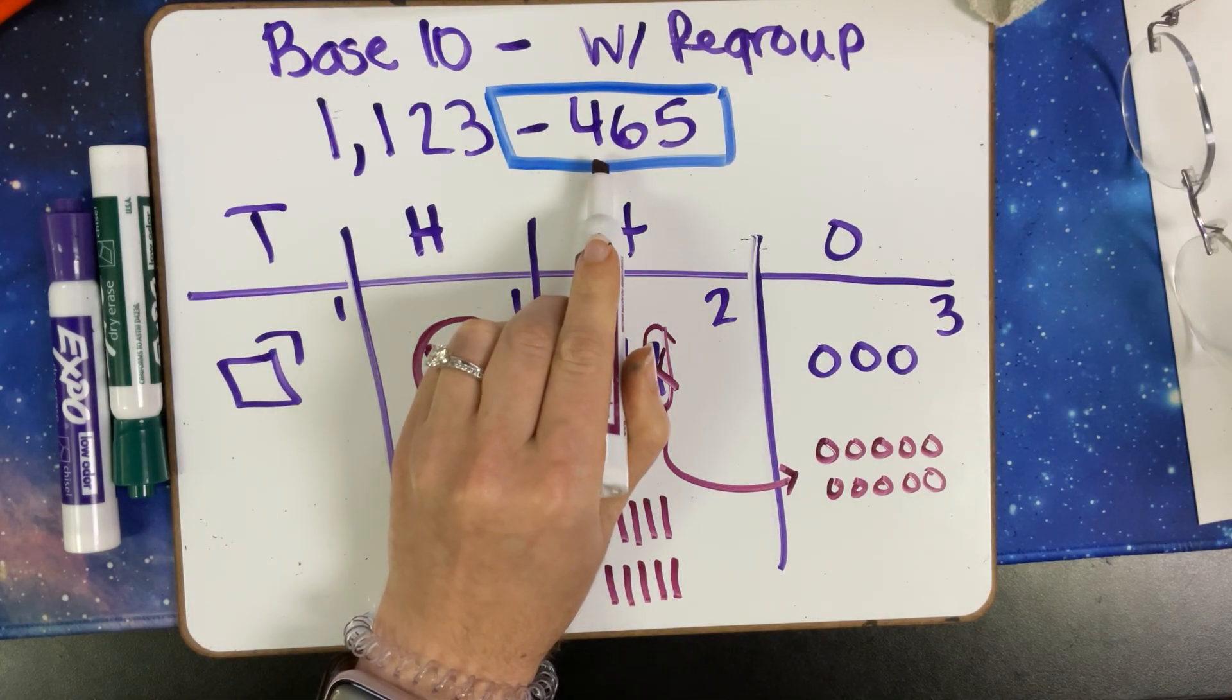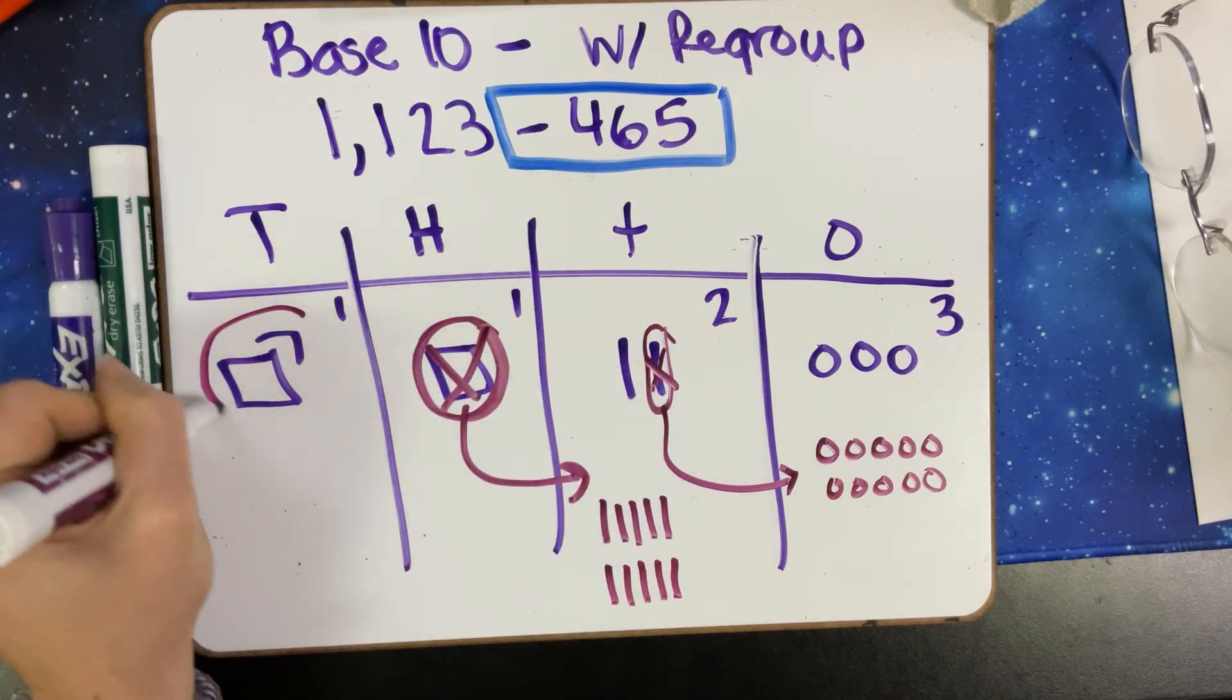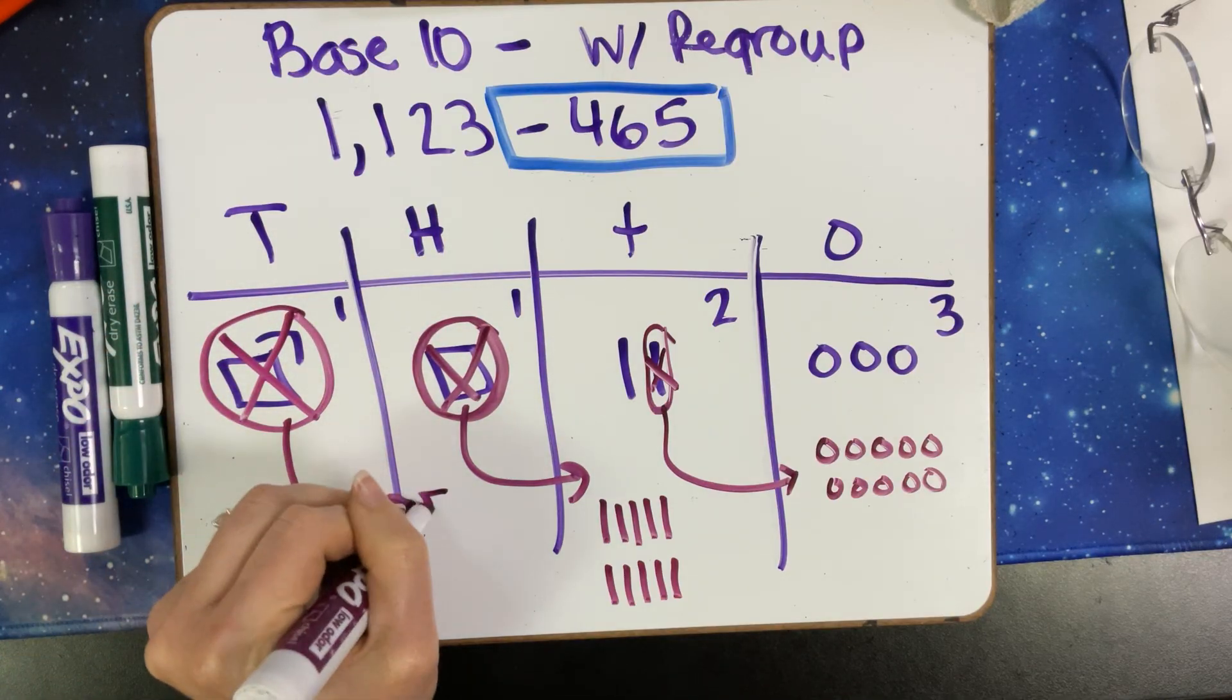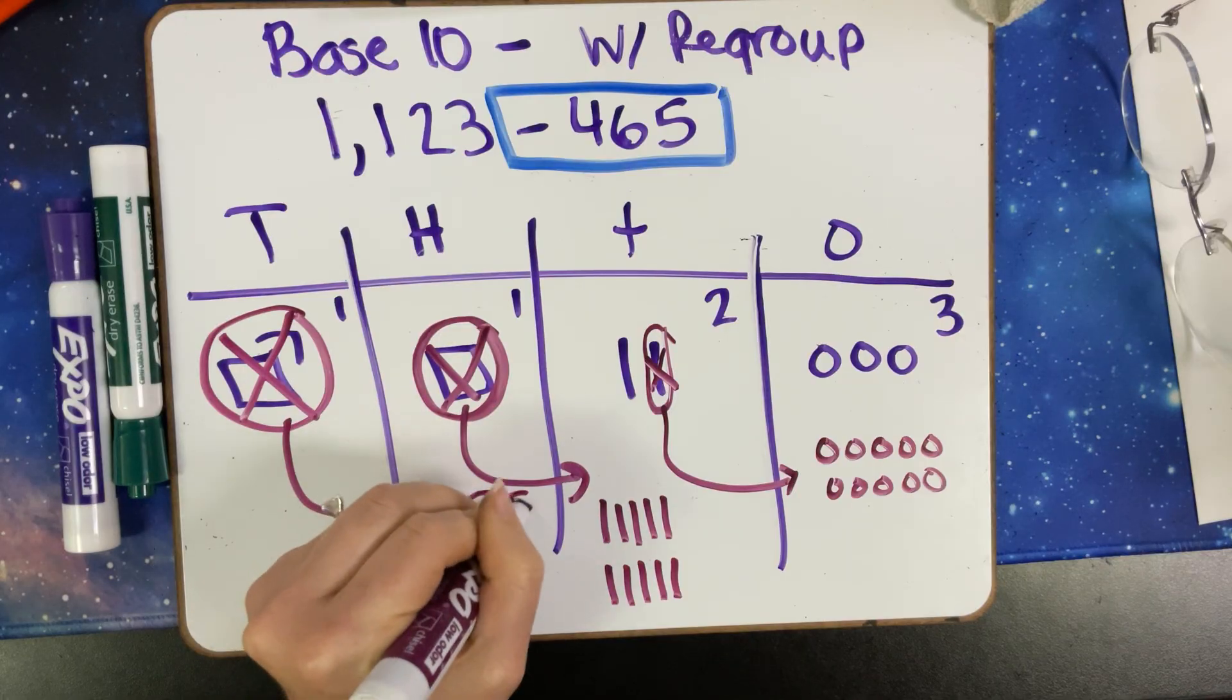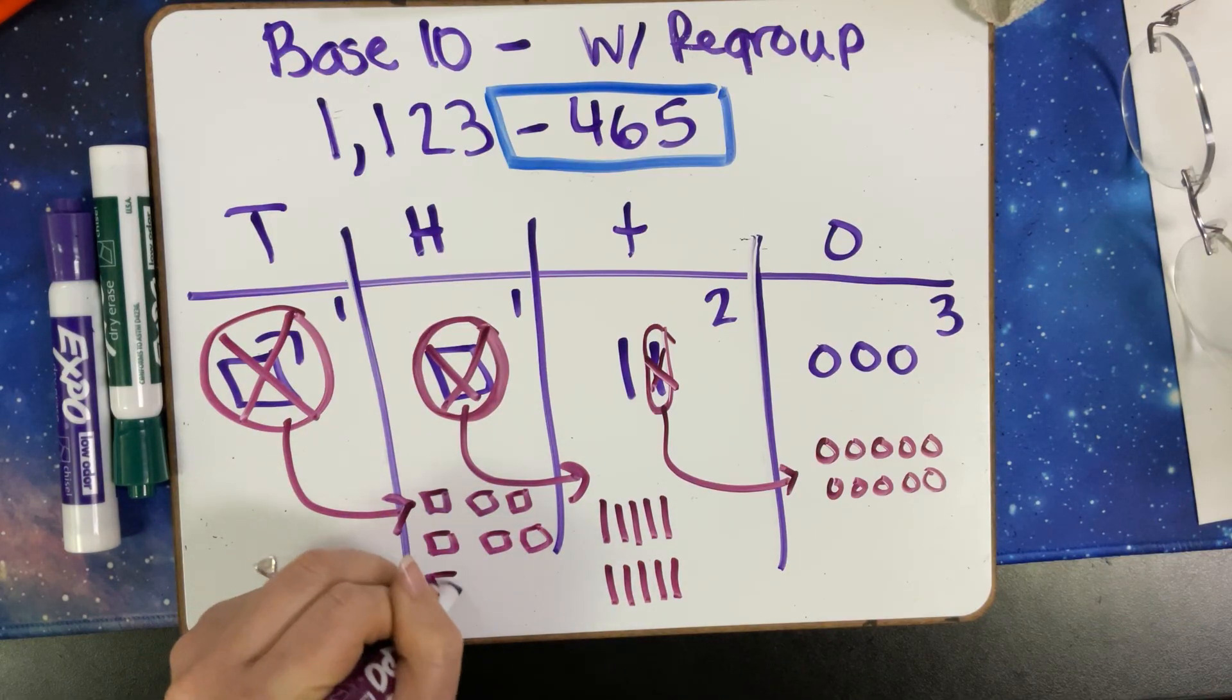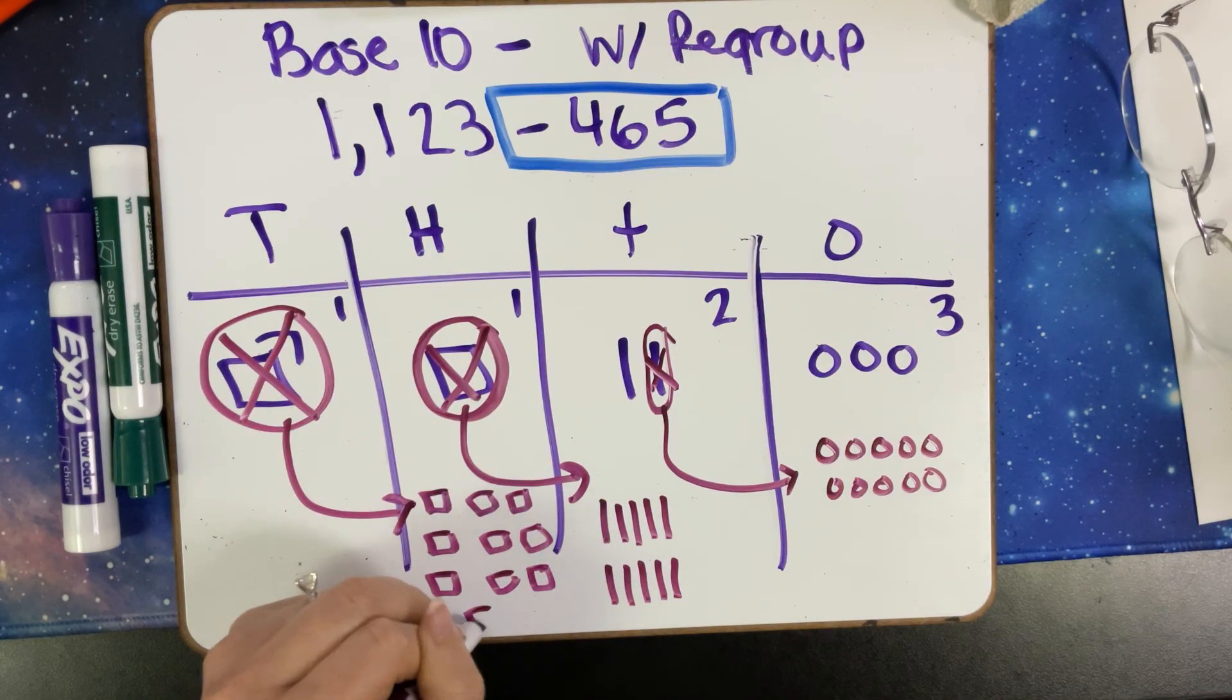I need to subtract 400 though. So I know I'm going to need to take the thousand and we're going to have to break it into its pieces. We're going to have 100, 200, 300, 400, 500, 600, 700, 800, 900, 1000.